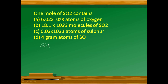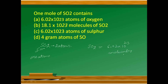From sulfur dioxide, it is very clear that in one molecule there is one sulfur atom and two atoms of oxygen. If we talk about one mole of sulfur dioxide, SO₂ is equal to 6.02×10²³ molecules of sulfur dioxide.